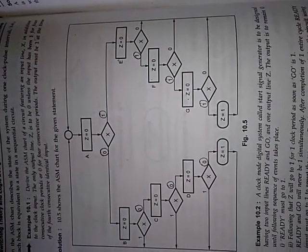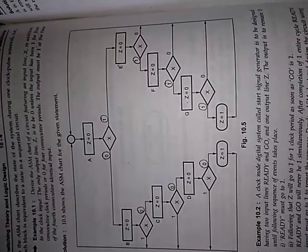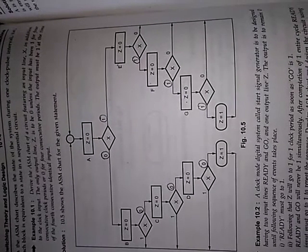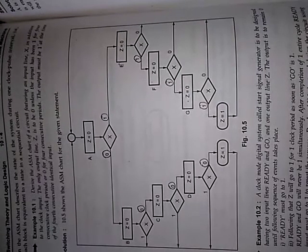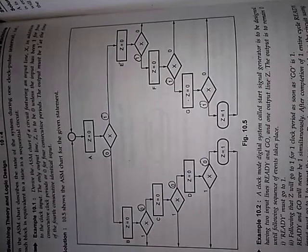What they are saying is the input you are supplying should be identical, either zeros or ones. Those should be four bits. That means you should get four zeros or you should get four ones. The output must be one at the time of the fourth consecutive identical input.